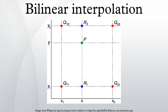Bilinear interpolation considers the closest 2x2 neighborhood of known pixel values surrounding the unknown pixel's computed location. It then takes a weighted average of these four pixels to arrive at its final interpolated value. The weight on each of the four pixel values is based on the computed pixel's distance from each of the known points.